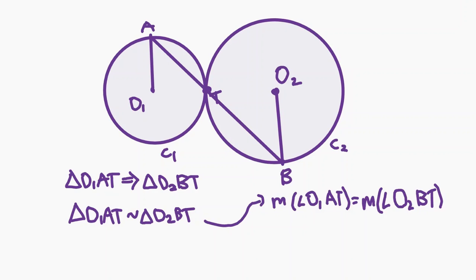Therefore, angle O sub 1 A T is equal to angle O sub 2 B T, and thus O sub 1 A and O sub 2 B are parallel.